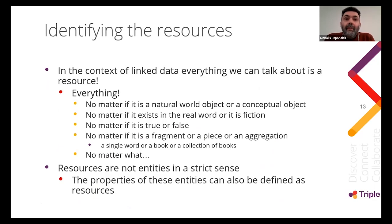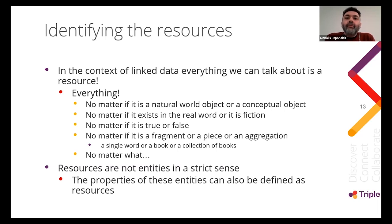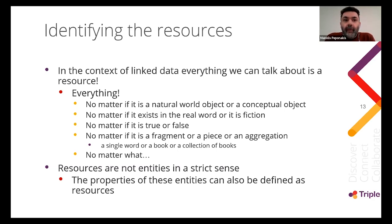What is a resource in the context of the semantic web and linked data? A resource can be anything we can talk about — and by anything, we actually mean anything. It could be an object of the natural world, like a desk or chair. It could be a conceptual object, like the concept of love or power. It may exist in the real world, like a person, or be a fictional character from a novel. It may be a real event, rumors, or even a known lie. In the context of the semantic web, resources are not entities in the strict sense — properties of these entities can also be defined as resources.